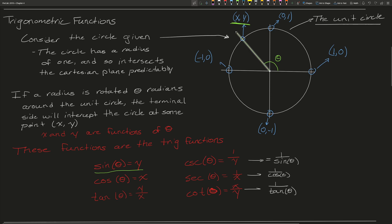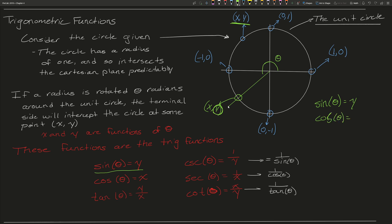So if we rotate this radius down to some angle theta, the terminal side will intercept the circle at some point (x, y). If we want to know the sine of theta, all we have to do is look at the y coordinate — that's our answer, so sine of theta is just y. If we ask for cosine of theta, we look at the x coordinate, so the output is just x. That is basically what the trig functions of a unit circle do — they just point to the x-coordinate, the y-coordinate, or a ratio of the two.